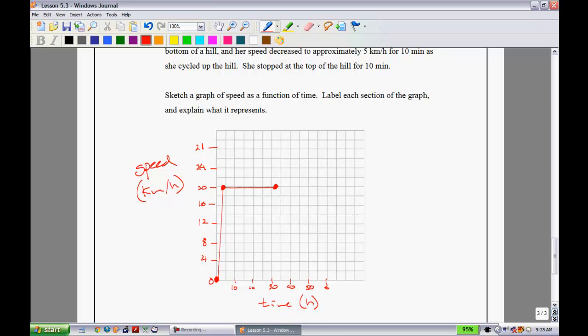So the next thing we see is that Sarah arrived at the bottom of the hill, and her speed drastically decreased to approximately 5 km an hour. So of course, that would have taken her a little bit of time for it to happen, but we would say now that her speed is somewhere around 5 km an hour.